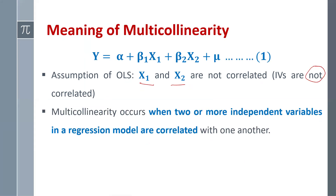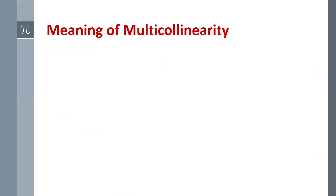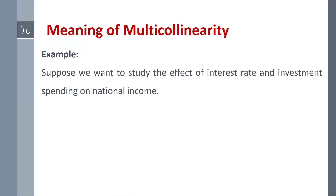Multi-collinearity occurs when two or more independent variables in a regression model are correlated. If X₁ and X₂ are correlated, we have the problem of multi-collinearity, which makes it difficult to determine the individual effect of each independent variable on the dependent variable. We are interested in the individual effect of X₁ on Y and the individual effect of X₂ on Y, but if X₁ and X₂ are correlated, this becomes difficult.